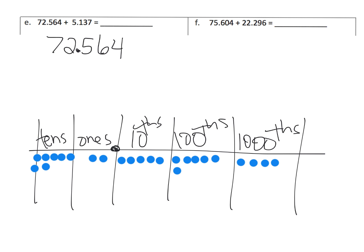Now, if we were going to model 5.137, well, we would put 5 in the ones place. We would put 1 in the tenths place. We would put 3 in the hundredths place. And we would put 7 in the thousandths place.